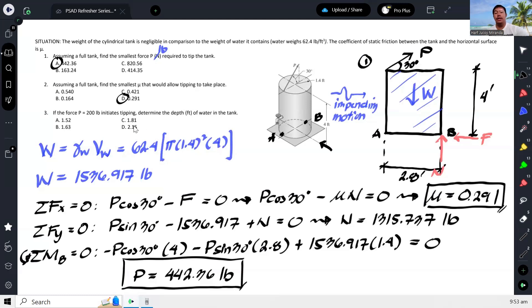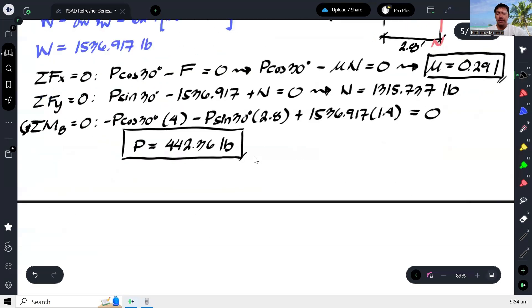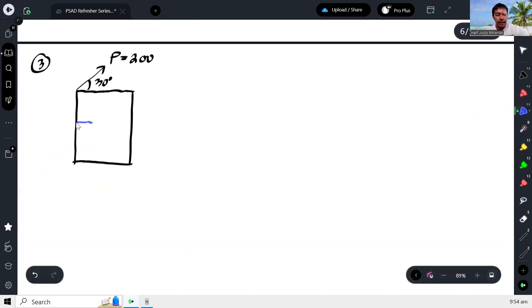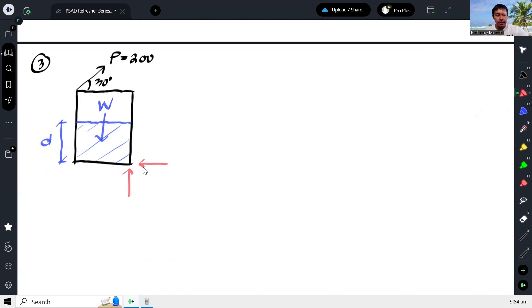And lastly, if the force P, 200 pounds, initiate tipping, determine the depth of water in the tank. So pinapahanap naman yung depth ng water. Okay, so let me just redraw again a free body diagram. Parang ganito yung mangyayari sa number 3. Ito yung cylindrical tank. Ito yung P, and then this time given yung exact value ng P. Pero sabi hindi puno yung tubig. I mean hindi puno yung tank, so pinapahanap actually ano yung depth nito. Tawagin natin na depth D. Tapos ito yung may water, so ito yung weight ng water. And then what else - so yung normal force tsaka friction will be again at the point B because it is at the verge of tipping.